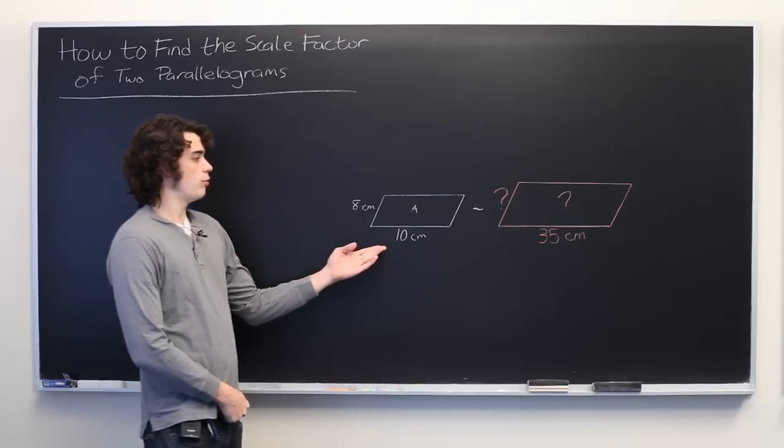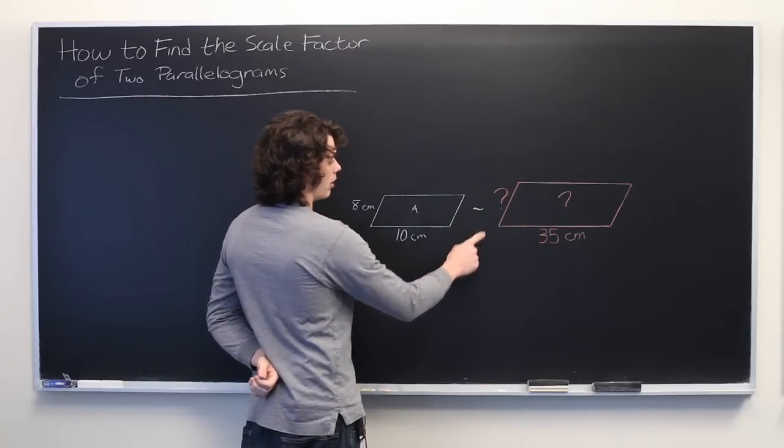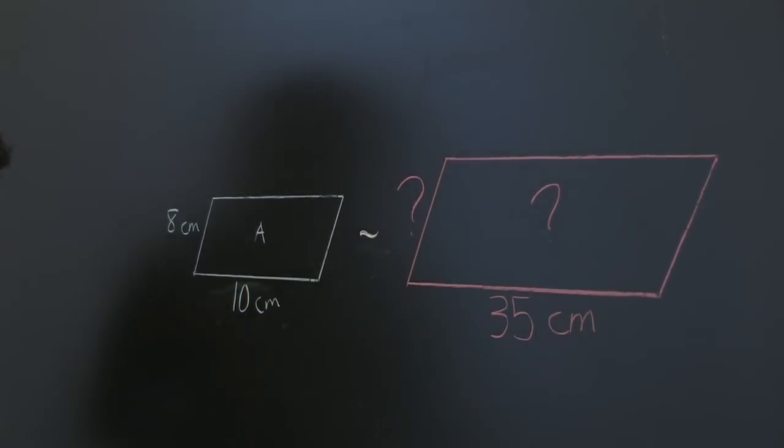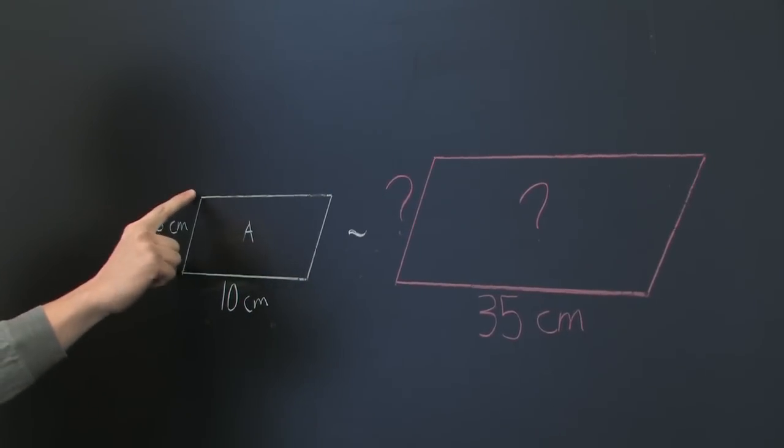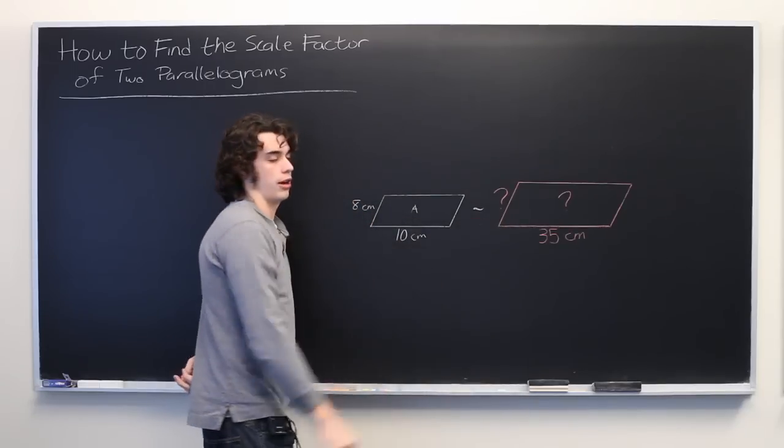So here we have two parallelograms, one blue, one red, and we are told that they are similar, meaning that the relationship between bottom side and the bottom side will be the same as the relationship between the top side and the top side. And we also know that all of the interior angles will be the same.